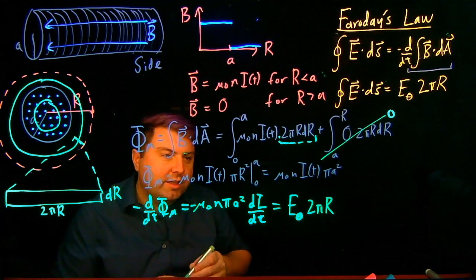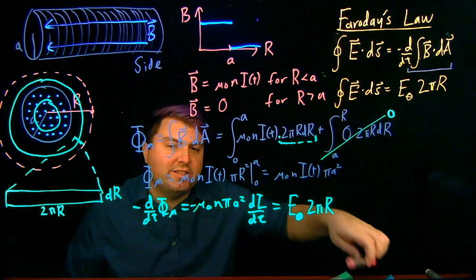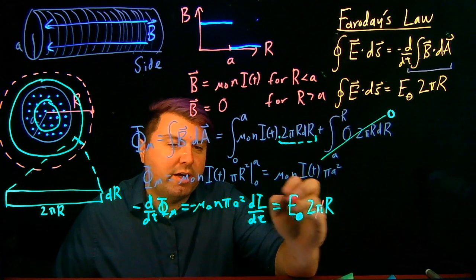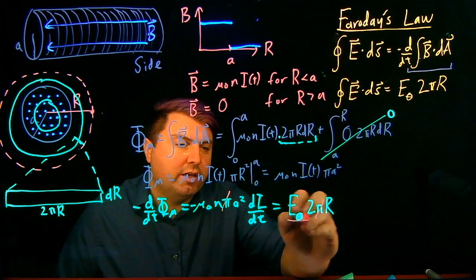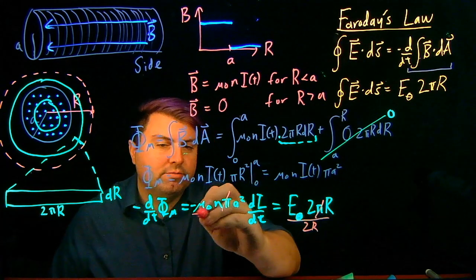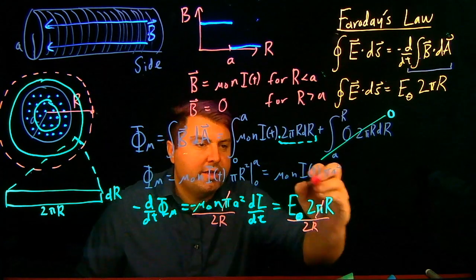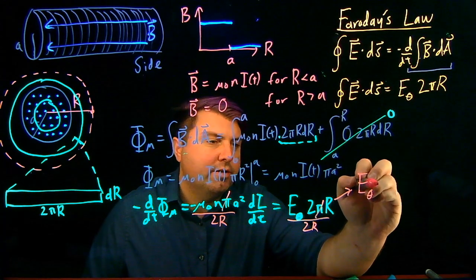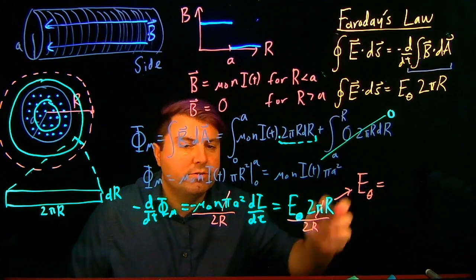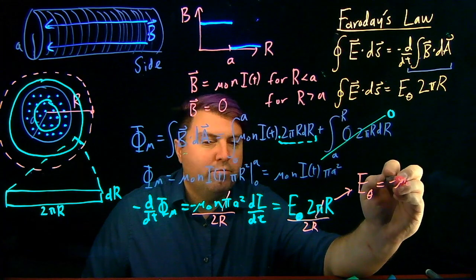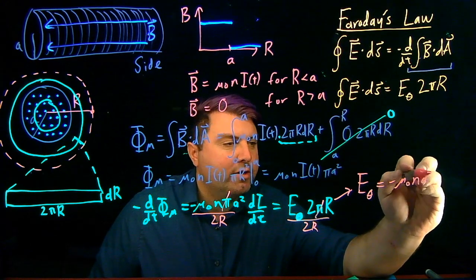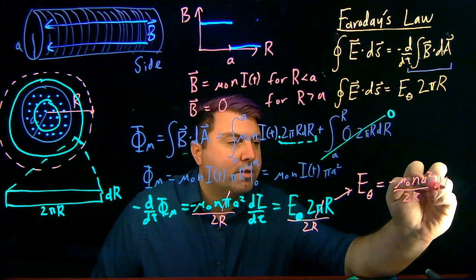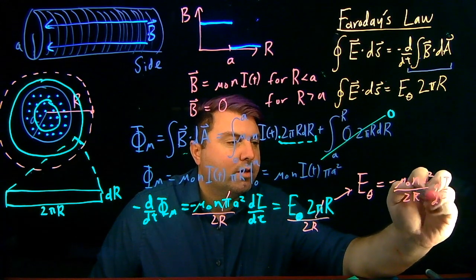And we know that all this is then equal to E in the theta direction times 2πr. Well, looking at this, we don't have as many cancellations as we used to have, but we can cancel the π on both sides, and then we can divide both sides by 2r. And if we do that, then what we get from this is that E in the theta direction is equal to negative μ₀nA²/(2r) times dI/dt.